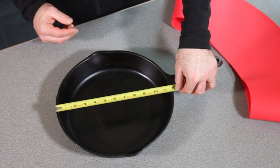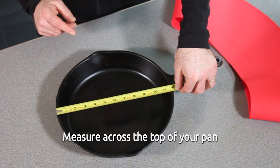To figure out which frywall is right for your pan, measure the top of your pan, not the bottom.